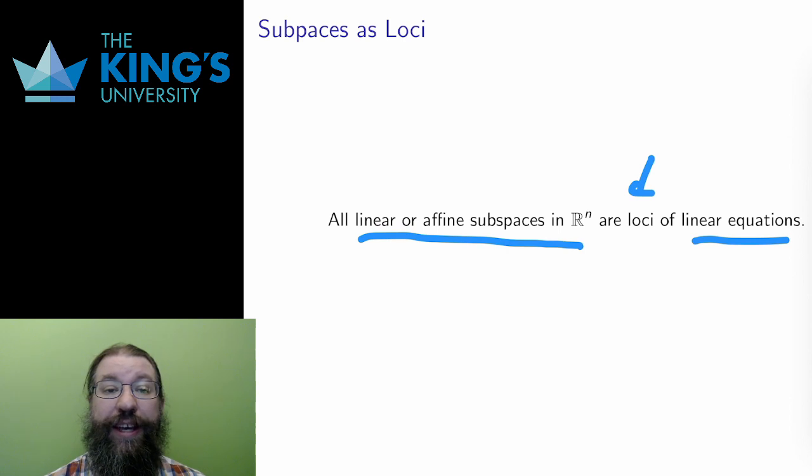First, it is a span or an offset span. Second, it is a linear or affine subspace. And third, it is the locus of some number of linear equations. All of these concepts align. All of them are different ways of talking about the same mathematical thing.